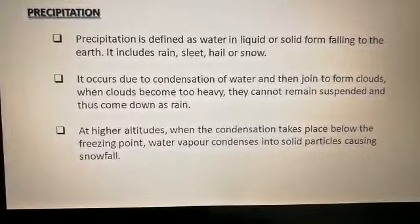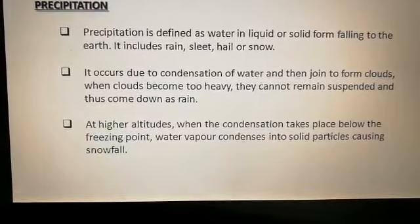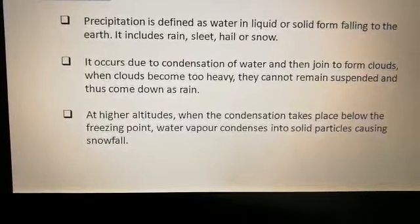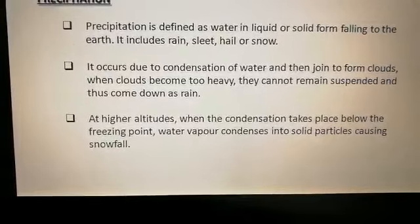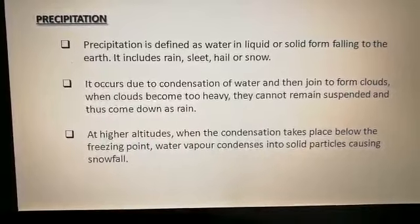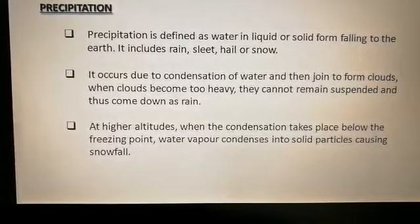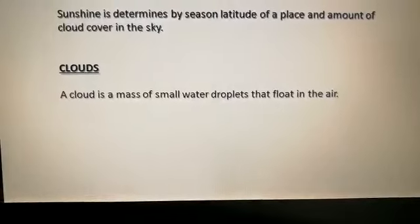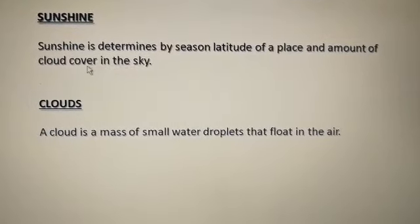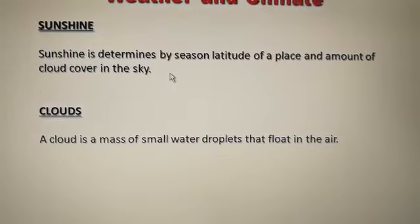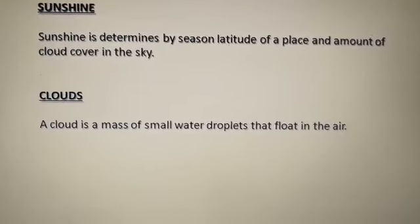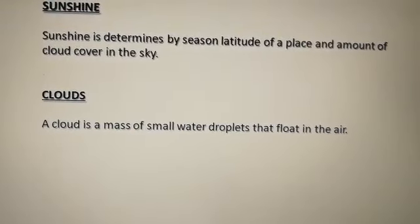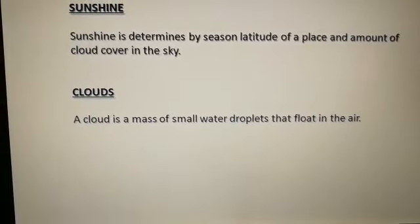Precipitation helps to lower the temperature of a place, and rain is the most common form of precipitation. Dew is another form where small drops of water appear on the ground during the night due to condensation of water vapor — it forms on a clear, calm night. Sunshine is determined by the season, latitude of a place, and the amount of cloud cover. Direct rays of the sun travel a shorter distance, while slanting rays travel a longer distance.